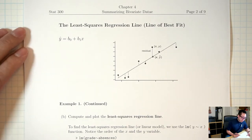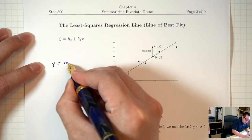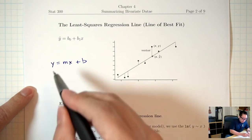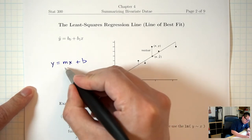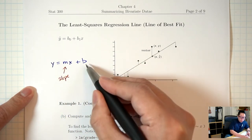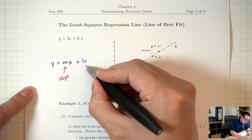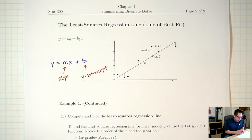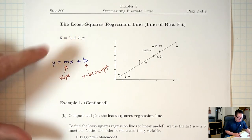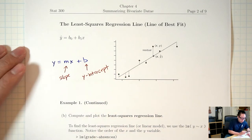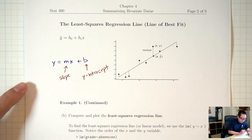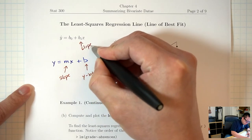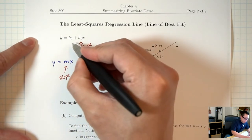In algebra the equation of a line is y = mx + b. The M — the coefficient of x — is the slope. The constant term with no x attached is the y-intercept. In statistics you may see it written differently, but it's the same thing: the number multiplying x (B1) is the slope, and the constant is the y-intercept.